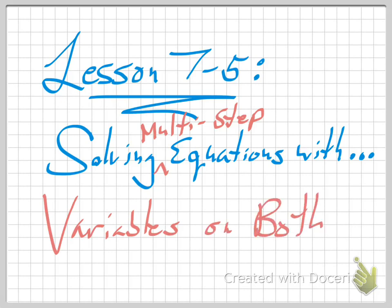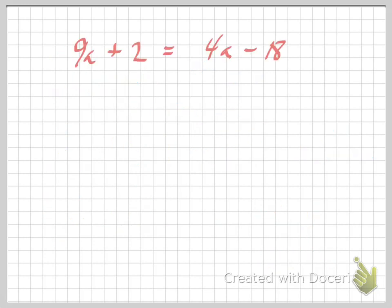Normally all we have to do is attack one side that has the variable on it. We try to get rid of all the numbers that are over there with the variable, and we get our answer. Well, what we're going to see today in today's lesson is equations like this: 9a plus 2 equals 7a minus 18.